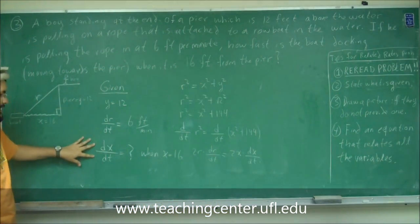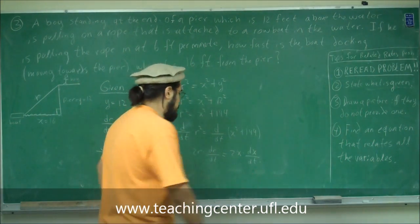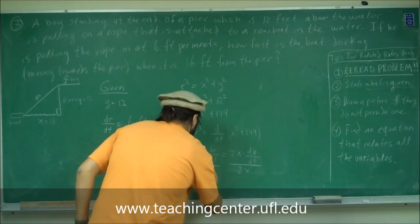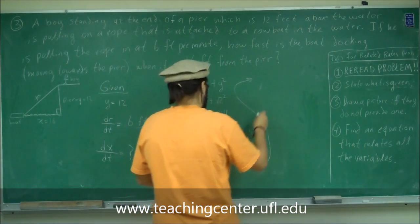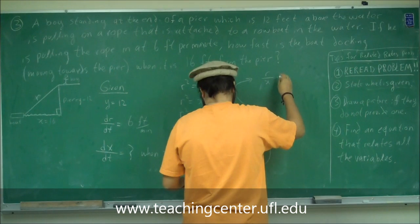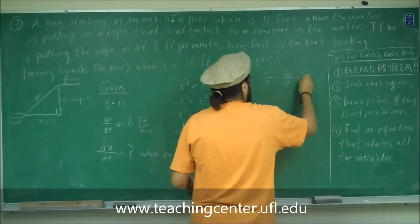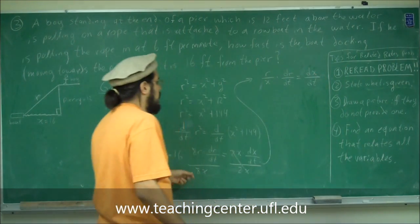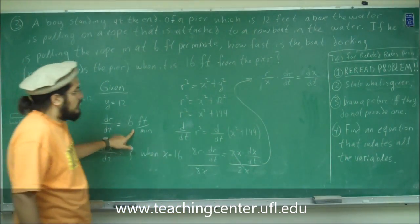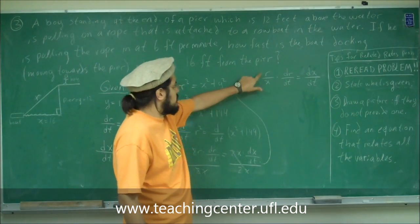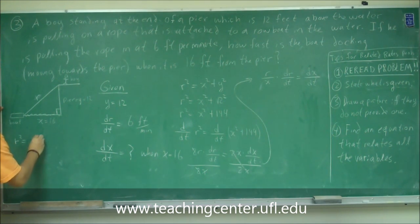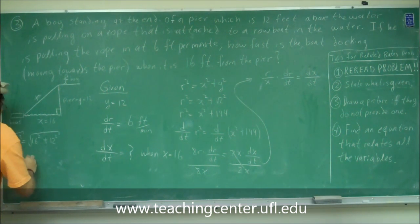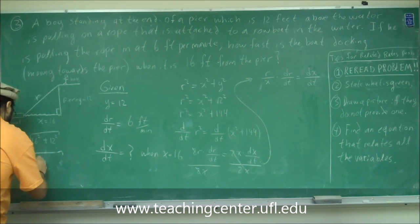Now we want to solve for dx/dt, so we divide both sides by 2X so that dx/dt is isolated. We're left with: dx/dt = (R/X) times dr/dt. We have dr/dt which is 6, and X which is 16, but we're missing R. We can find R because we have X=16 and Y=12: R² = 16² + 12², so R = √(16² + 12²).